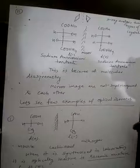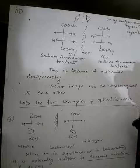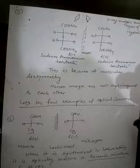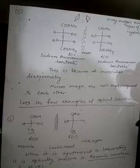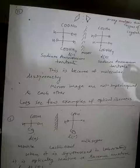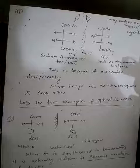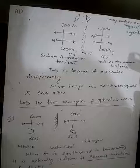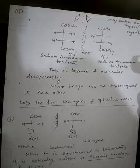In his experiment on crystallization of sodium ammonium tartrate, he observed that there are two types of crystals. He separated them and took the mirror image of each. He found that these crystals have molecular dissymmetry — their mirror images are not superimposed on each other.